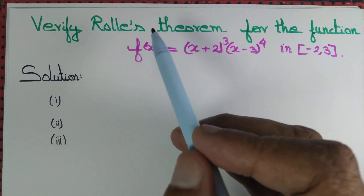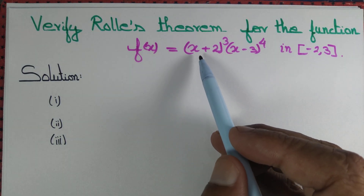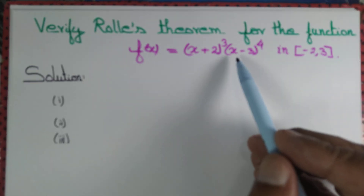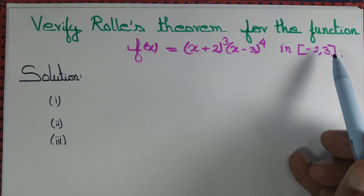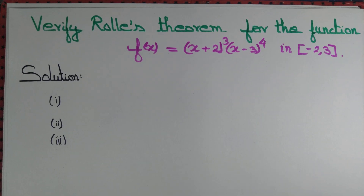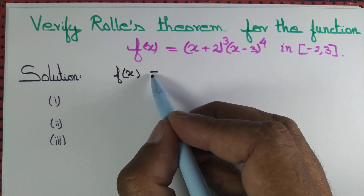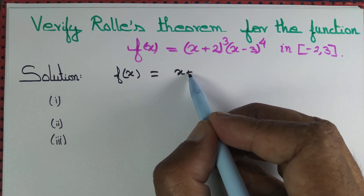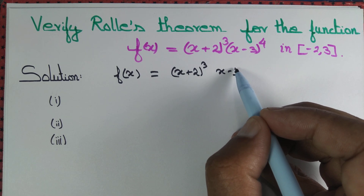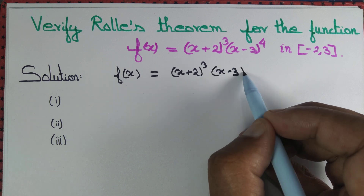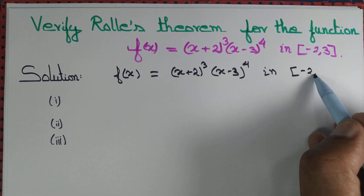Let us verify Rolle's theorem for the function f(x) = (x + 2)³ × (x − 3)⁴ in the closed interval [−2, 3].